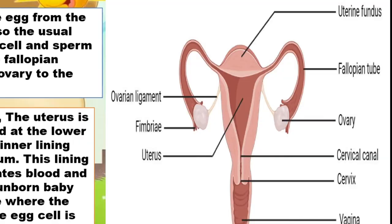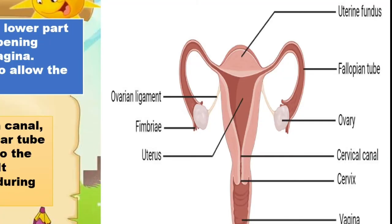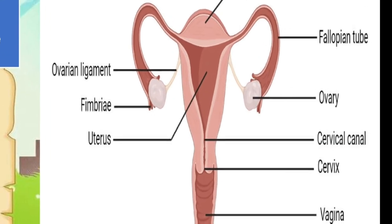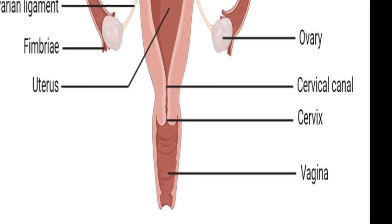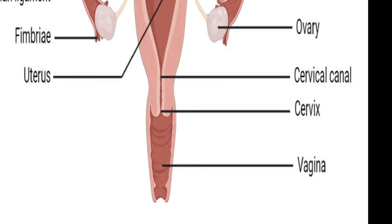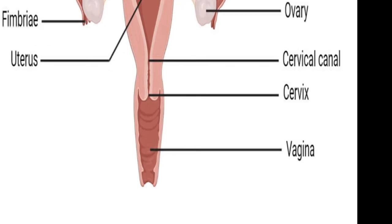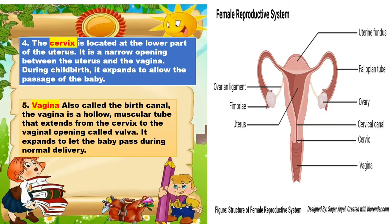The next one is the cervix. It is located at the lower part of the uterus. It is also a narrow opening between the uterus and the vagina. During childbirth, it expands to allow the passage of the baby.